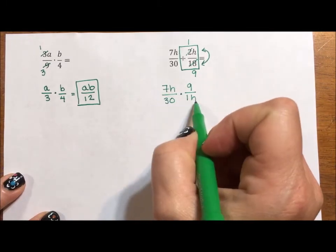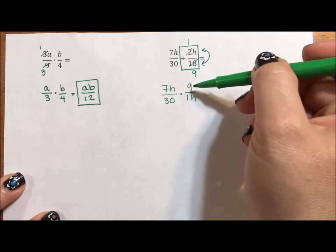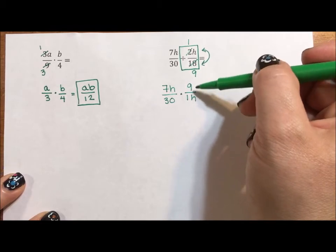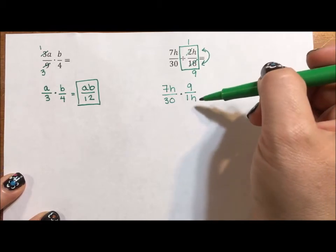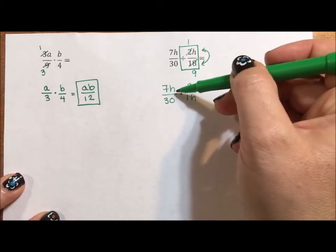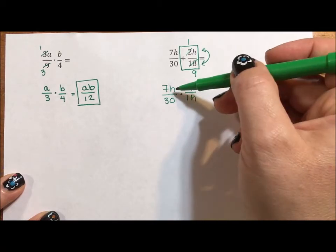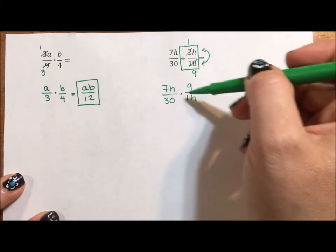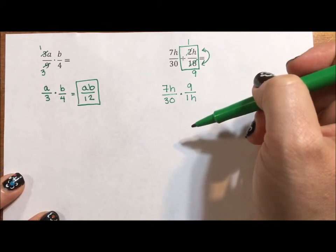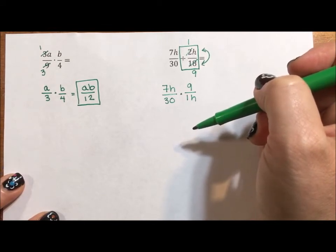Now the thing about variables, just like numbers, if the same thing appears in the numerator and denominator, they cancel by dividing. Remember, a variable is just a placeholder for a number like 6. 7 times 6, 1 times 6. It's not anything complicated. It's just an unknown number.